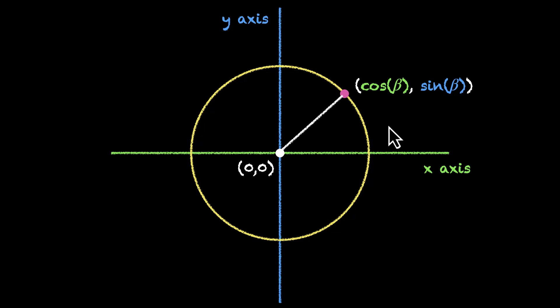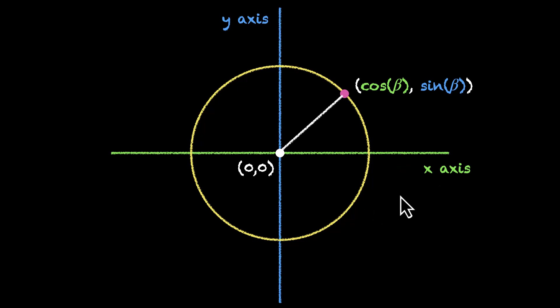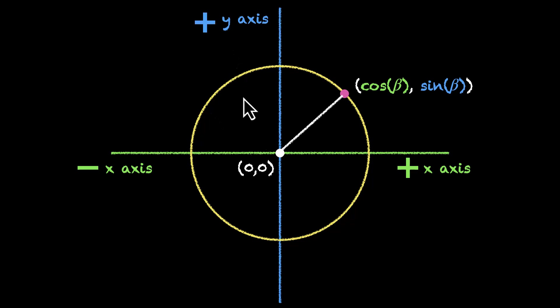Let's do that. But before we go ahead, let's mark the axes. This is our positive x-axis. This is negative x. This is positive y. And this is negative y.